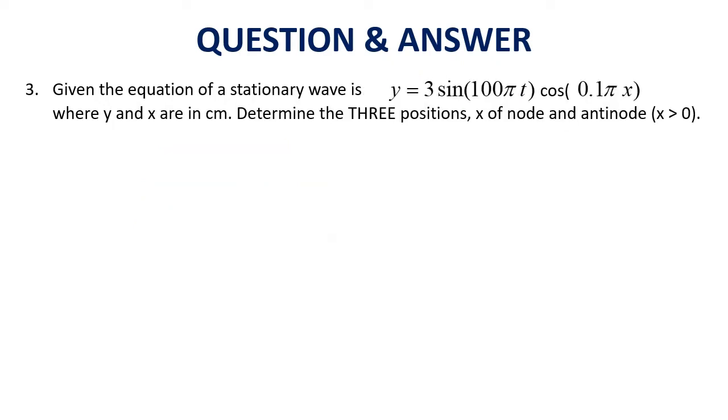The third question is about standing wave. Given the equation for stationary wave - the other name for stationary wave is standing wave. We compare Y equals 2A sine(ωt) cos(kx). We can rearrange this as 3 cos(0.15πx) sine(100πt), where Y and X are in cm. Determine the 3 positions. The keyword here is 3 positions. Position symbol is X, we need to find 3 values of X when node and antinode happen, with the condition X must be greater than 0.